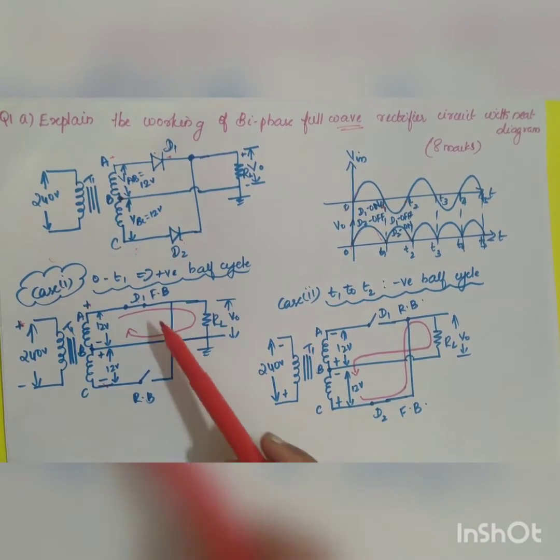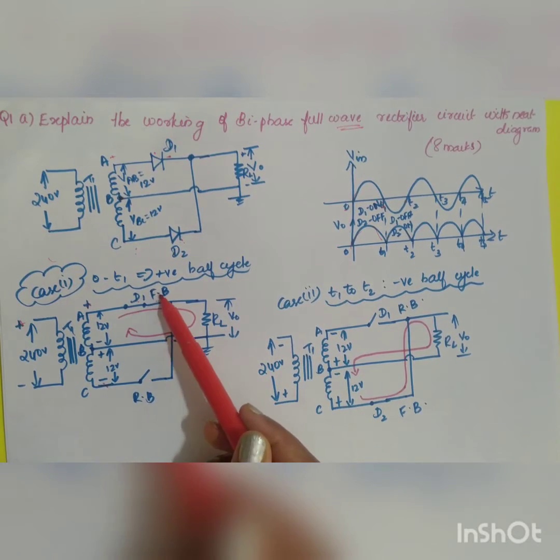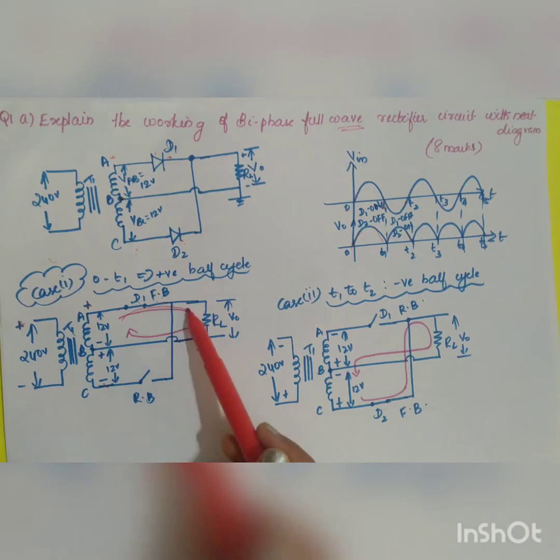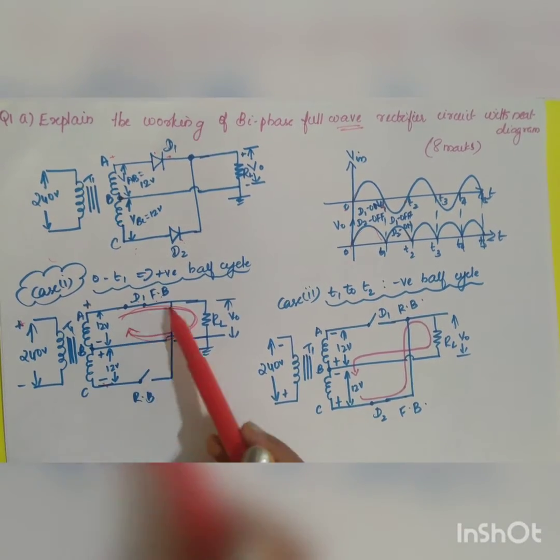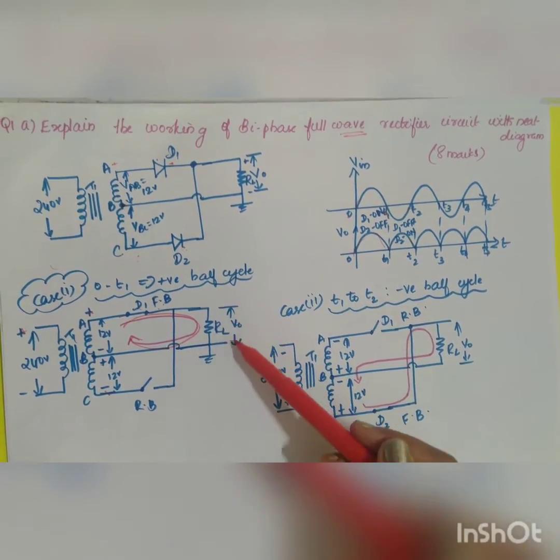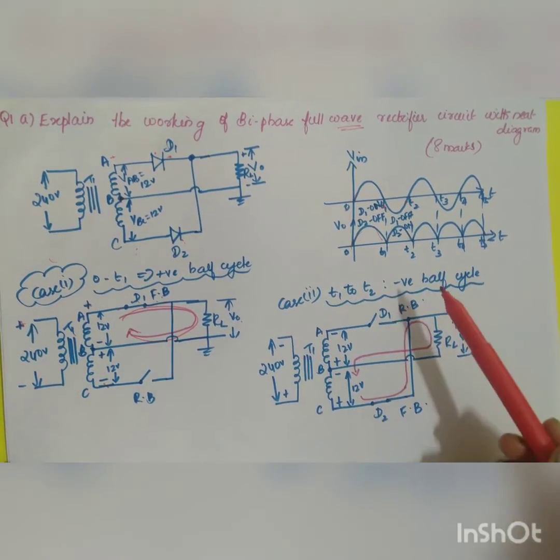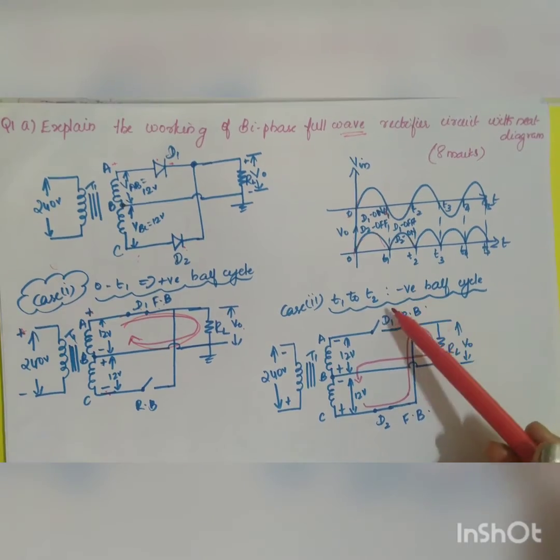The current conduction flows from positive to negative. This is the flow of current, and you can get the output voltage across your load resistor RL. What is happening in the second case?